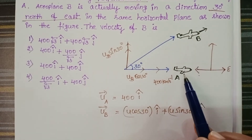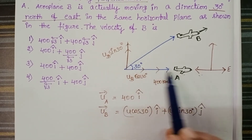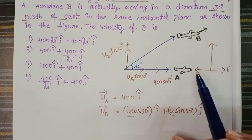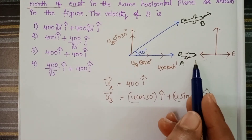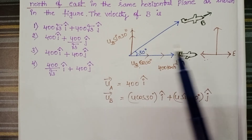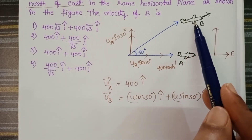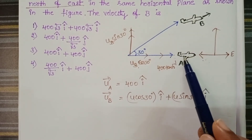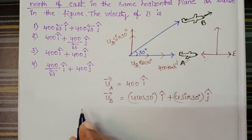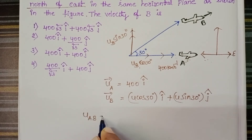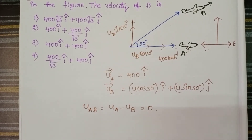Aeroplane B appears perpendicular to the direction of aeroplane A because the relative velocity along the horizontal direction becomes zero. That means the velocity of A along the horizontal direction equals the velocity of B along the horizontal direction — so the relative horizontal velocity is zero, and that is why aeroplane B appears to be moving vertically relative to aeroplane A.